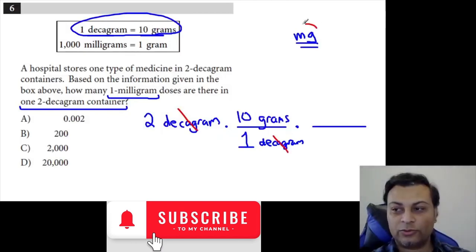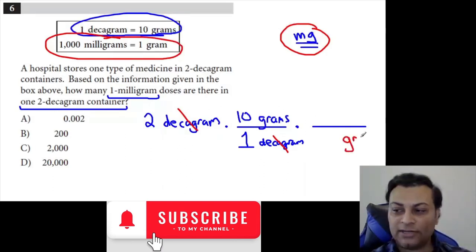However, we need to convert all the way to milligrams. Well, for that we just keep going. You can get grams on the bottom. It's got to be on the bottom so it cancels with the one on the top. It says a thousand milligrams is one gram. A thousand milligrams is one gram.